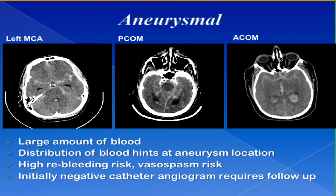These patterns of blood distribution are associated with aneurysm, and there's a high rate of re-bleeding. We have to do a cerebral angiogram early to detect the aneurysm, to coil it or clip it. If we don't see an aneurysm on the first angiogram, there's a recommendation to repeat it a few days later to make sure you didn't miss a thrombosed aneurysm. These patients also have a high risk of subsequent vasospasm between days 4 and 14, which can lead to ischemic strokes.